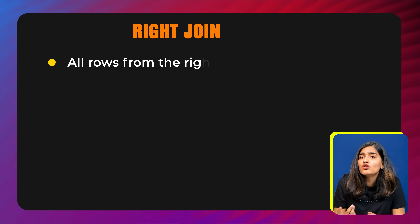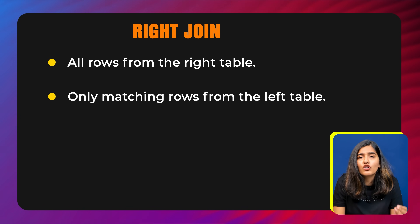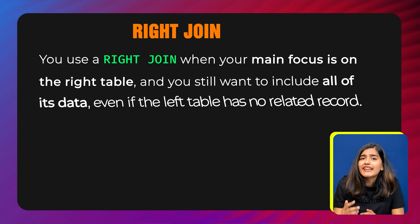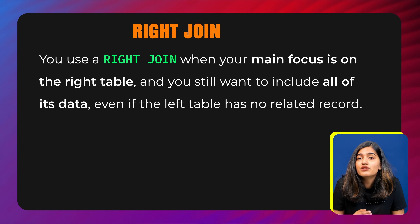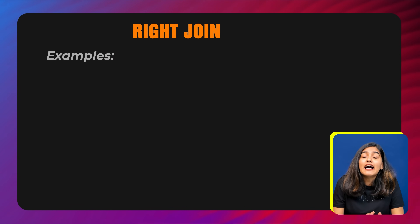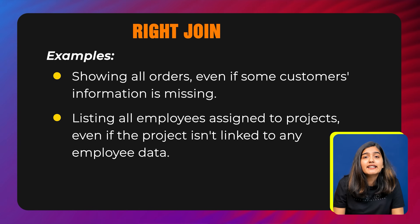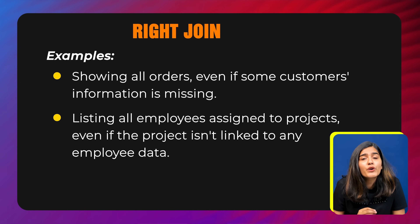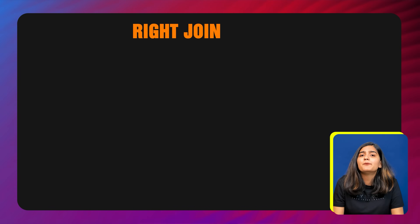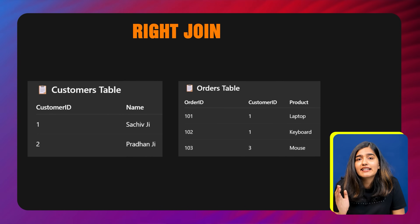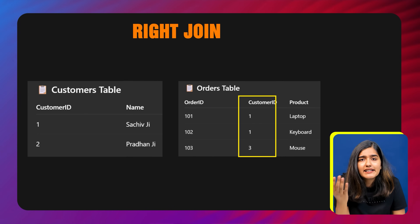A right join returns all rows from the right table and only matching records from the left table. If there is no match in the left table, the result shows null for columns from the left table. You use a right join when your main focus is the right table and you still want to include all of its data even if the left table has no related records — for example, showing all orders even if some customer information is missing, or listing all employees assigned to a project even if the project isn't linked to any employee data.